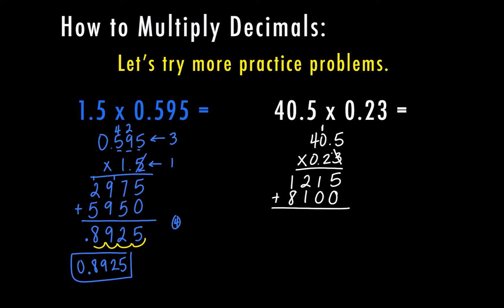I don't have to do this last number because it's a zero, so it would be a row of zeros — you can skip that. Adding them up I get 5, 1, 3, 9. Then I go back to my original problem and count my decimals: 1 place after the decimal here, and 1, 2 places after the decimal here. My total decimals in the problem is 3, so I'm going to move it 1, 2, 3. The answer is 9 and 315 thousandths.